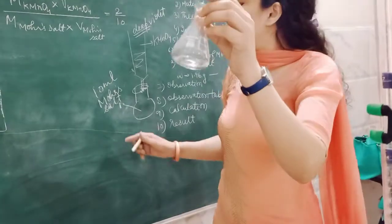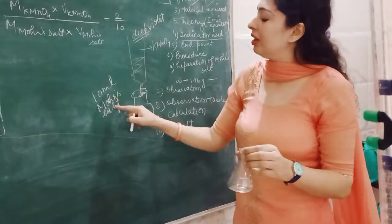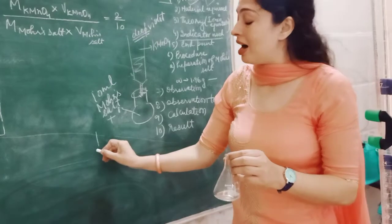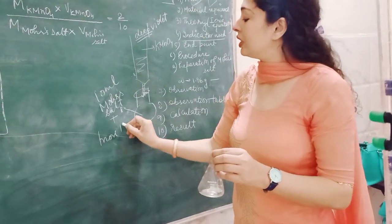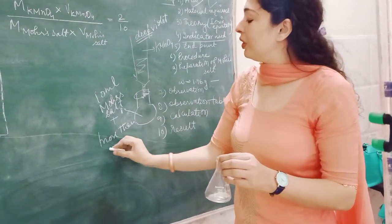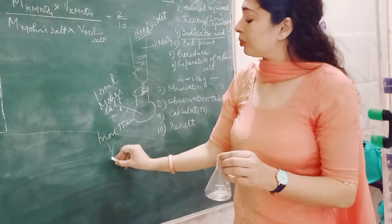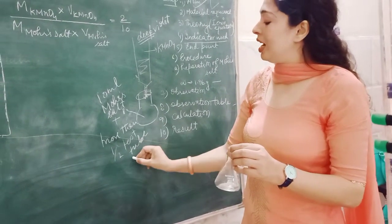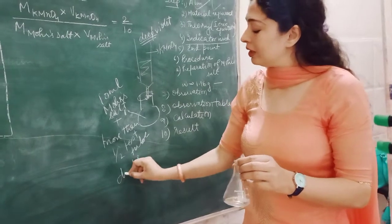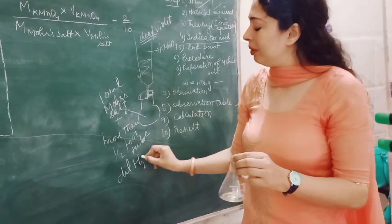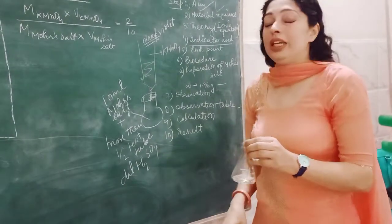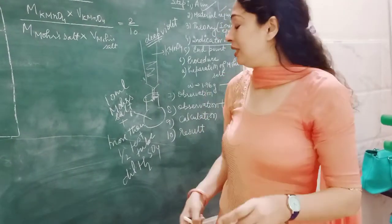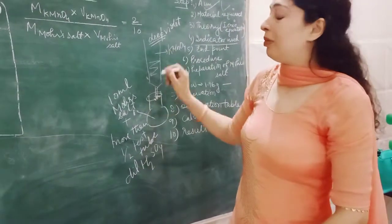What is in the conical flask? 10 ml Mohr salt plus more than half a test tube of dilute sulfuric acid. You will get the reagent bottle of dilute sulfuric acid and also get the KMnO4 to fill the burette.